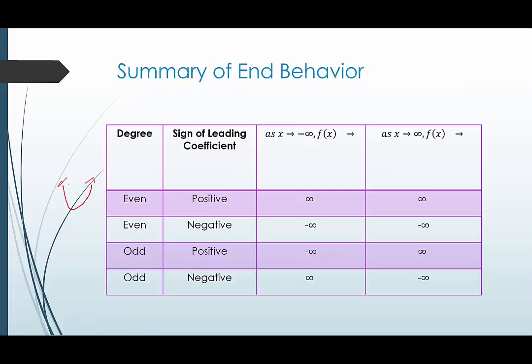That would look like this — a quadratic. The graph of a quadratic is called a parabola and it goes up in both directions when a is positive. When a is negative for a quadratic, it turns around, going down in both directions.